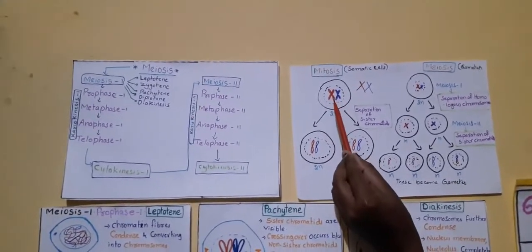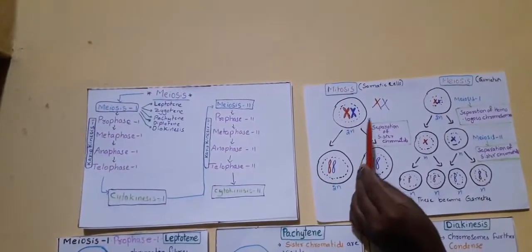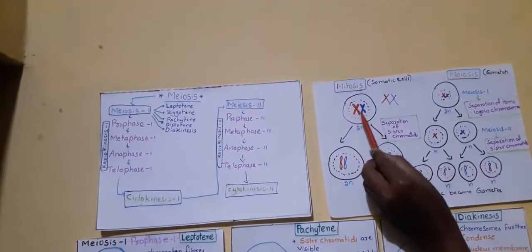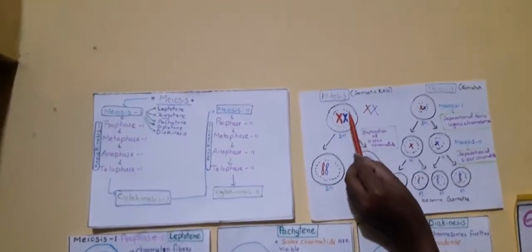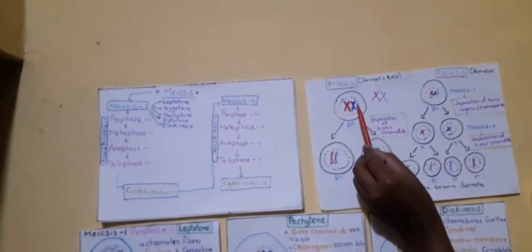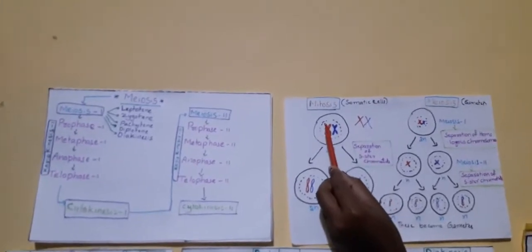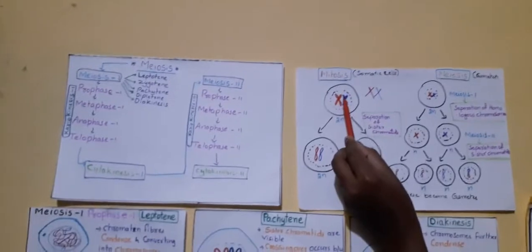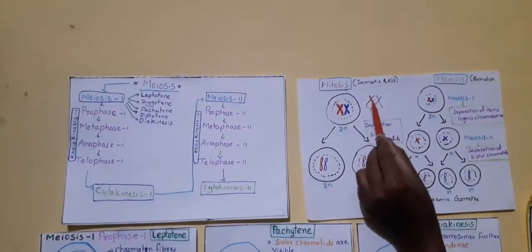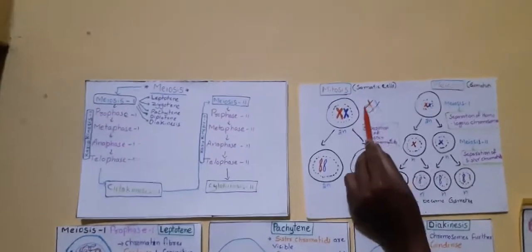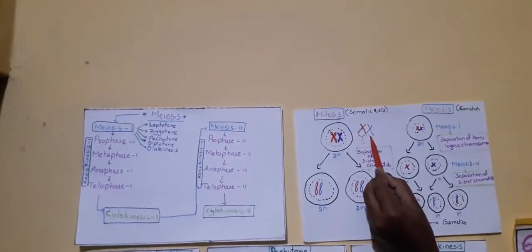These chromosomes make a duplicate copy of themselves. The red colored one forms its duplicate red colored chromatid, and the blue colored one forms another blue colored chromatid — the chromatid number gets doubled. These duplicated copies are called sister chromatids. Two red chromatids are called sister chromatids, and two blue chromatids are also called sister chromatids.